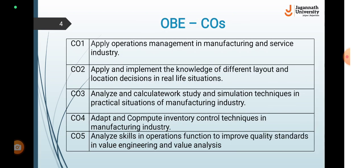These are the outcome-based course outcomes. The first course outcome is to apply operations management in manufacturing and service industry. You will be able to achieve the first course outcome after completing three units: introduction to operations and production management, developing operations strategies for competitive advantage, and the difference between manufacturing and service industries.